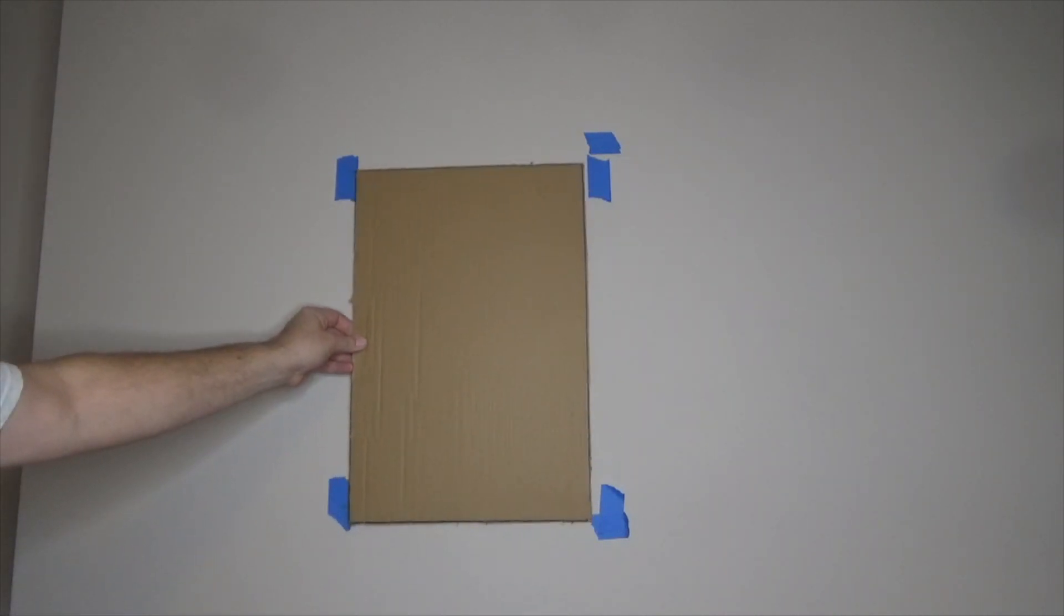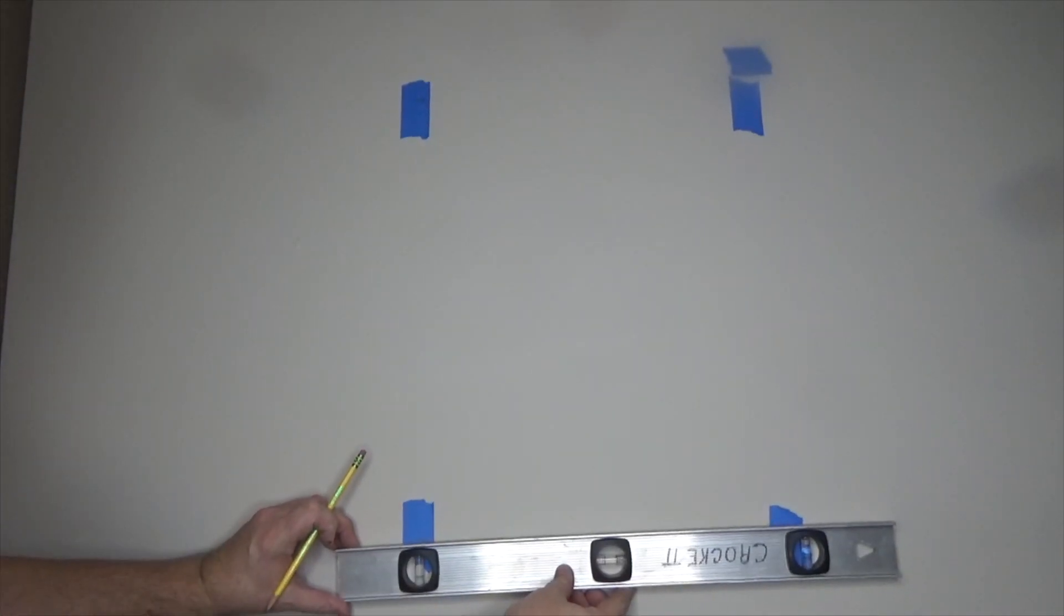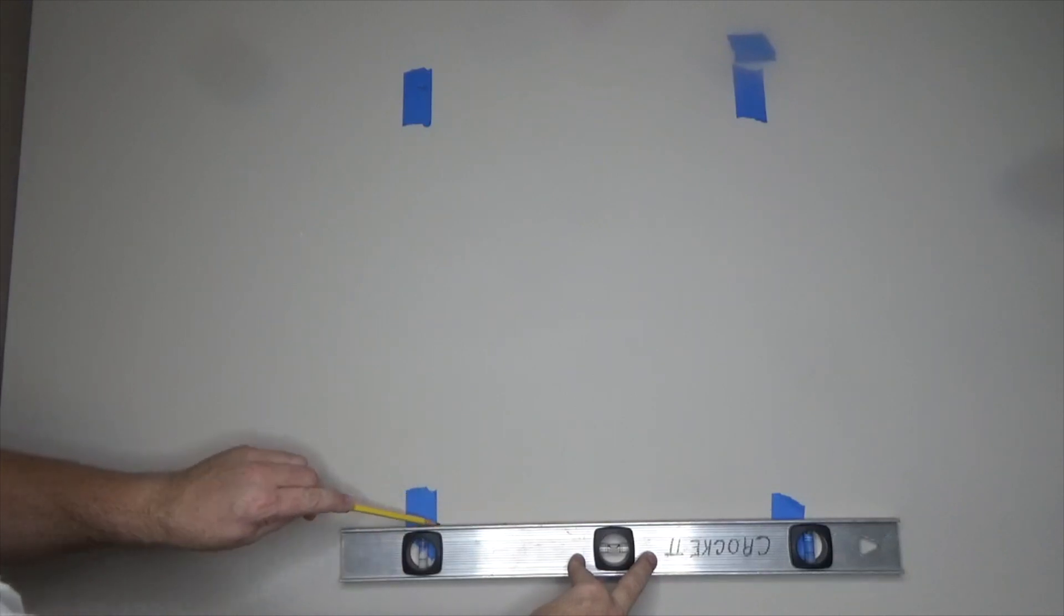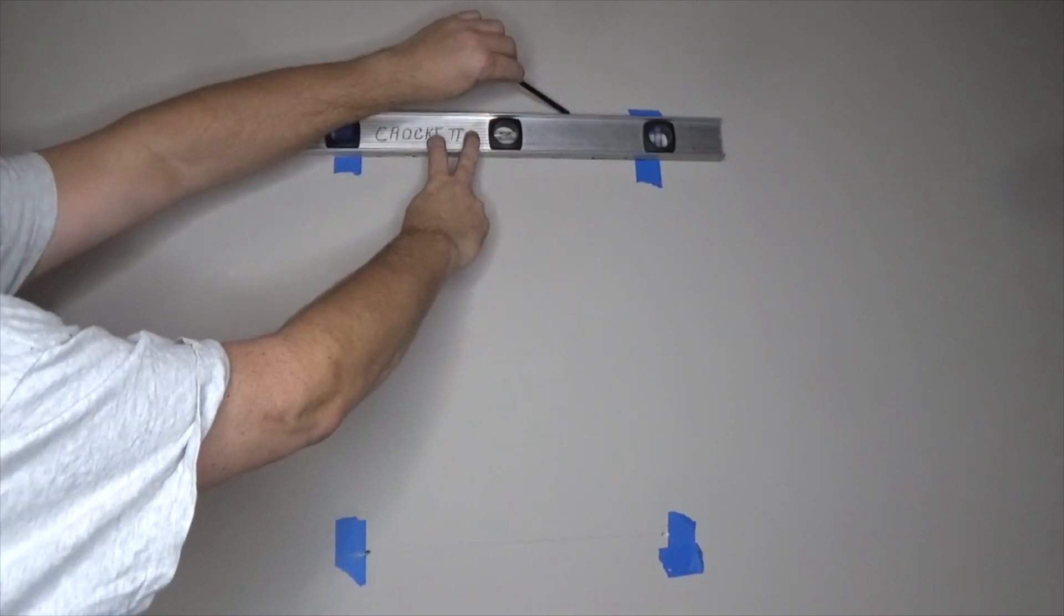Now take the cardboard pattern and check for size, making sure the cabinet will fit in this span. Using a level, strike a line along the bottom marks and along the top marks of the cabinet's back dimensions.